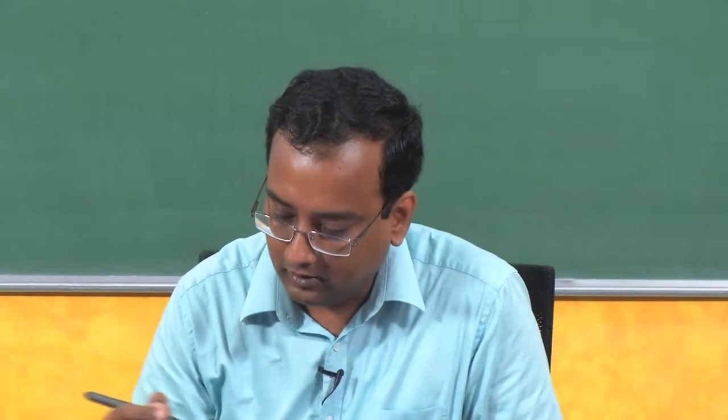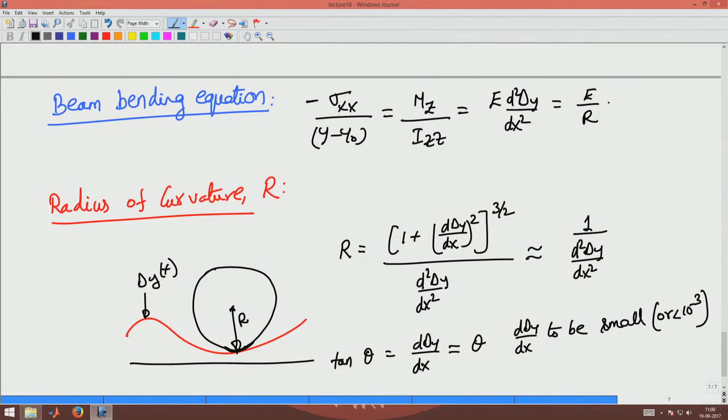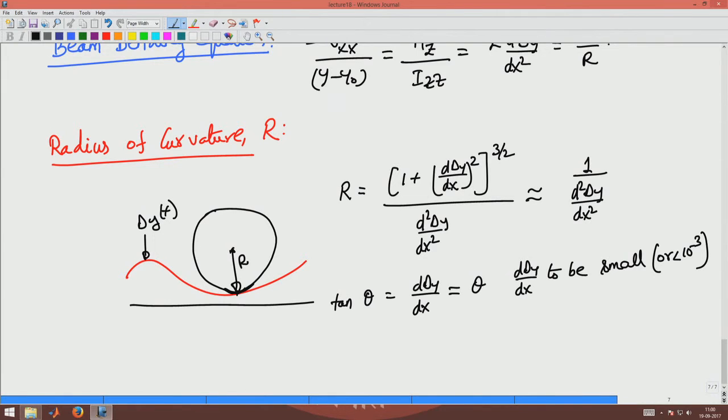I will use that radius of curvature here to estimate what my bending stresses are directly in that case. So basically this is E/R. Now there is one more quantity called curvature which is denoted by φ, which is nothing but 1/R, which is M/(E·Izz), which is nothing but εxx/(y - y₀).